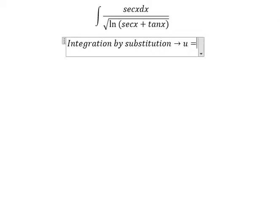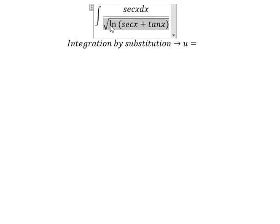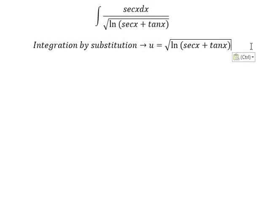We set u equals to this expression. Then we square both sides so we can cancel the square root.